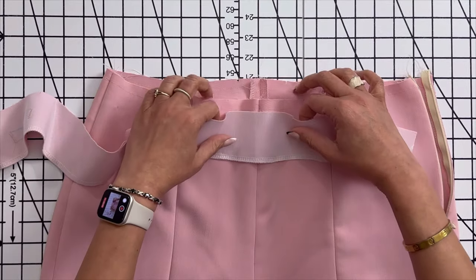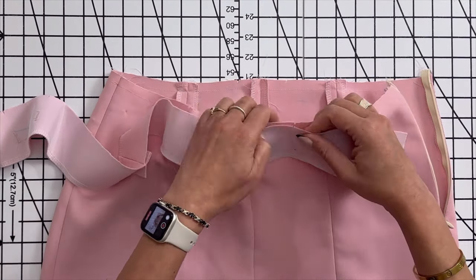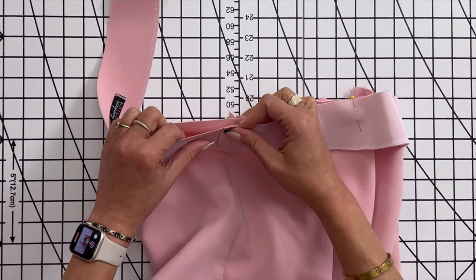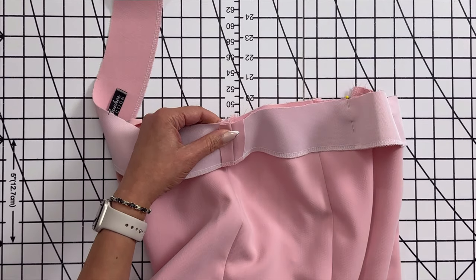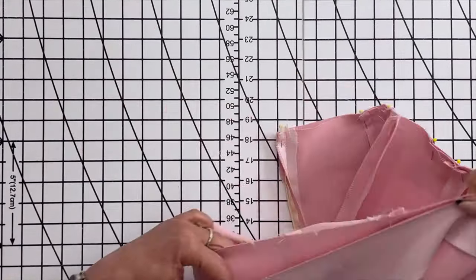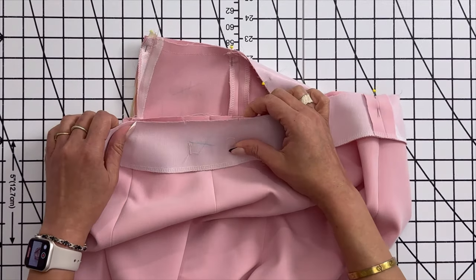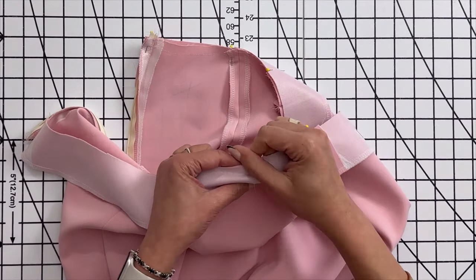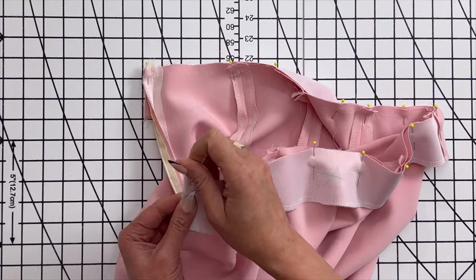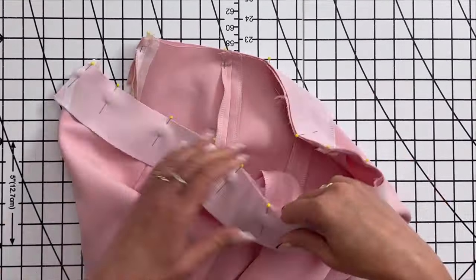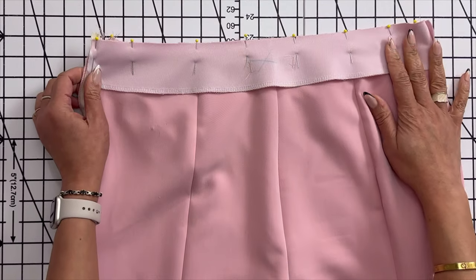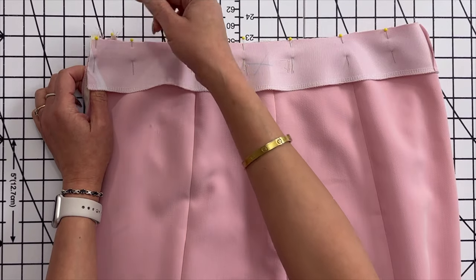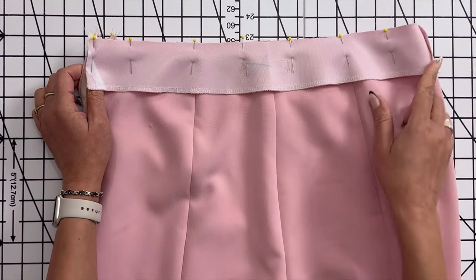You want to match your notches. Match the side seam. Match your notches in the back. Now we're going to take this to the sewing machine and sew a five-eighth of an inch seam allowance all the way around. And then we are going to understitch and trim down the seam allowance a little bit.